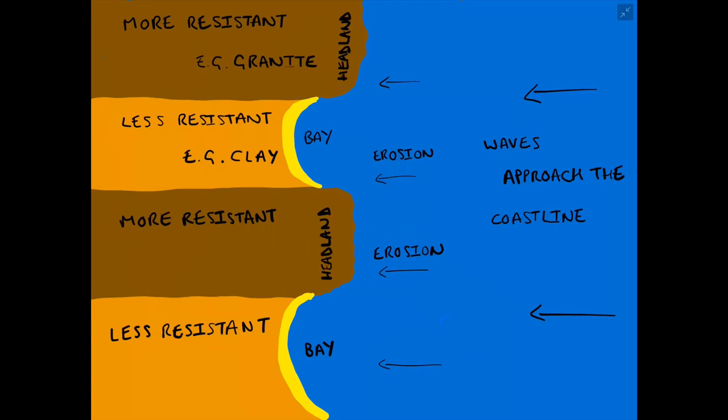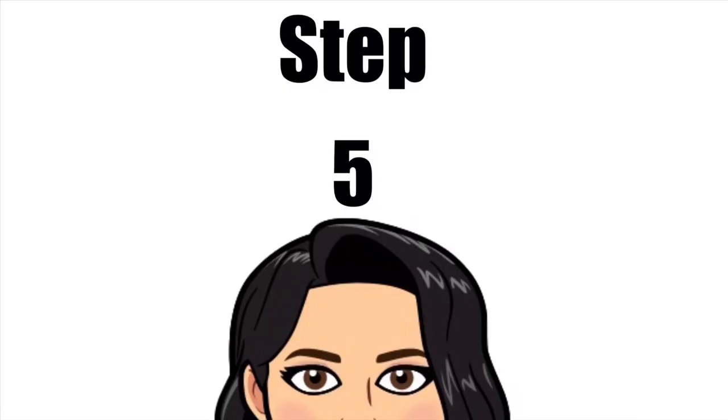Step four in the formation of a headland and bay involves areas of more resistant rock jutting out or sticking out into the sea as headlands, and the less resistant rock areas being set back inland, creating bays.